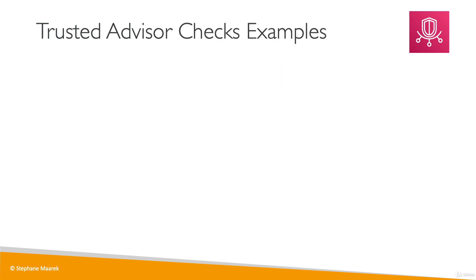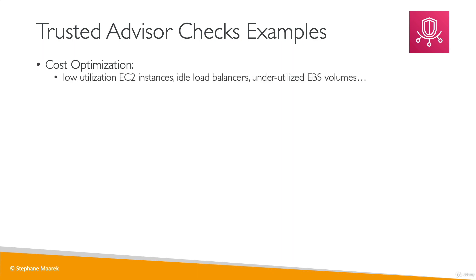What are some important checks done by Trusted Advisor? For cost optimization, it will show you EC2 instances that are underutilized, load balancers that are idle, EBS volumes that are underutilized, and reserved instances and savings plans optimization.